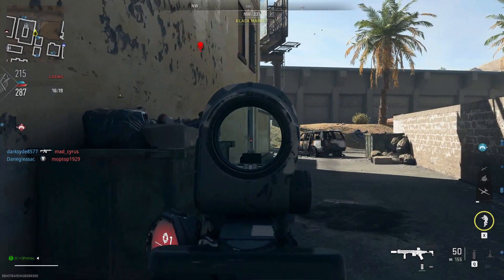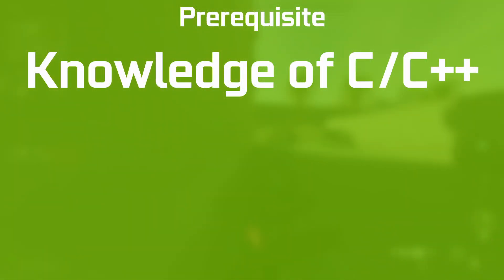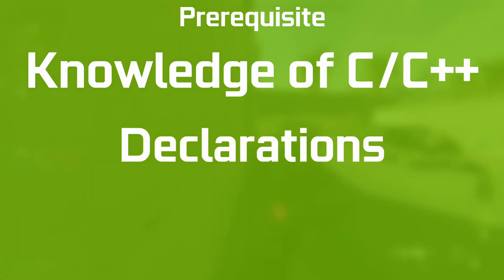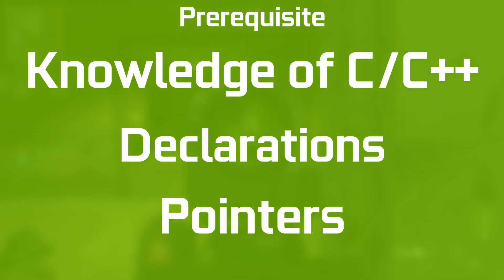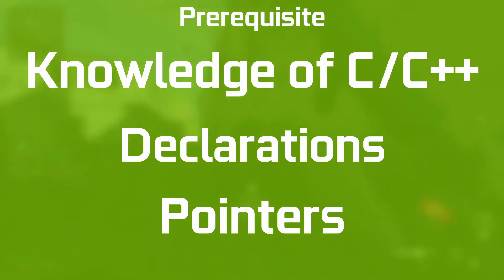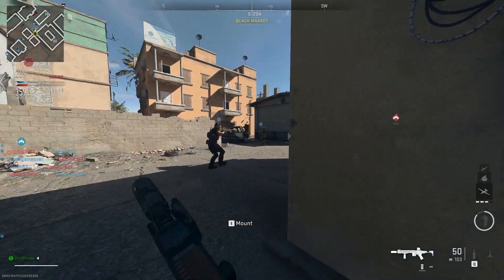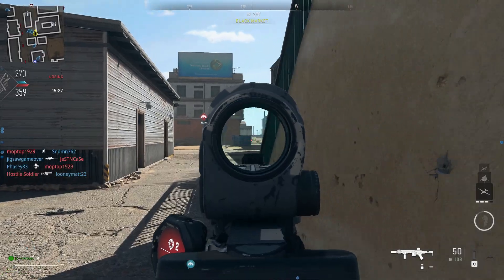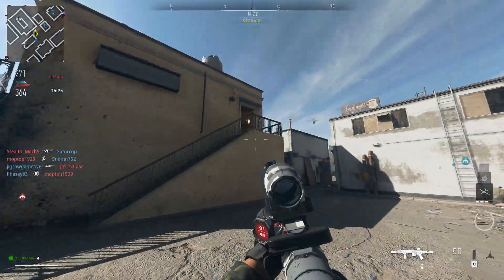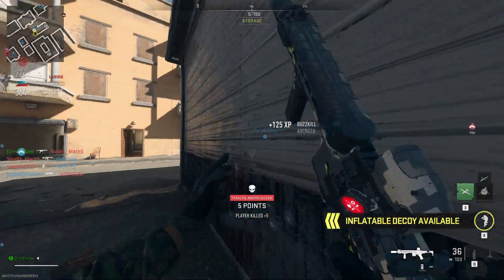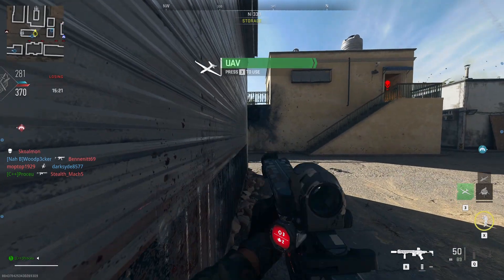I'm assuming that you have basic knowledge of C or C++, such as how to declare variables, function declarations, pointers, and memory management. The rest I'll explain, as it's an additional layer of functionality and syntax that's added with CUDA. Let's begin with some of the conceptual information that's going to be helpful when we discuss the syntax and program structure.